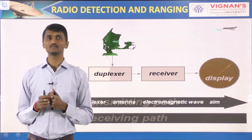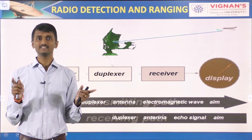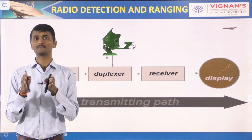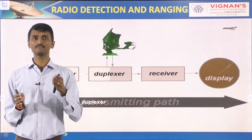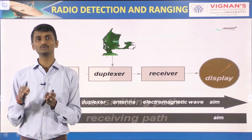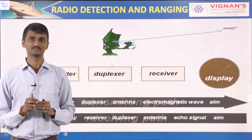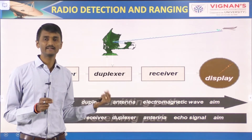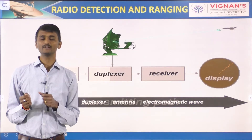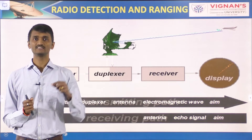If relative motion exists between the target and the radar, there is a shift in the carrier frequency of the reflected wave. That shift is called the Doppler effect, and it is a measure of the target's relative velocity. It may be used to distinguish moving targets from stationary objects. In radars which continuously track the movement of a target, a continuous indication of the rate of change of target position is also available.